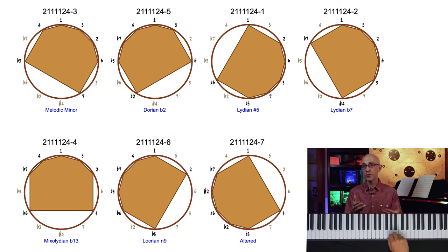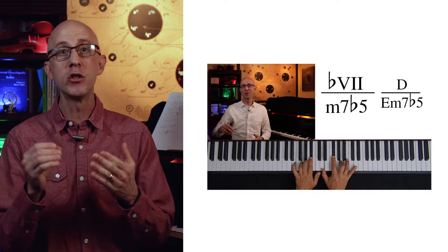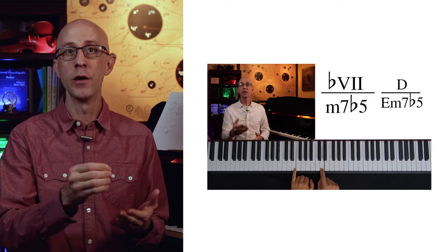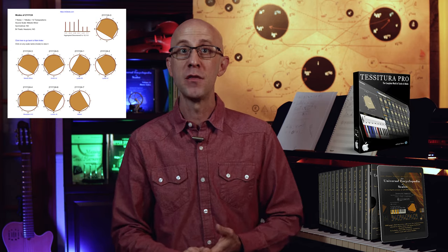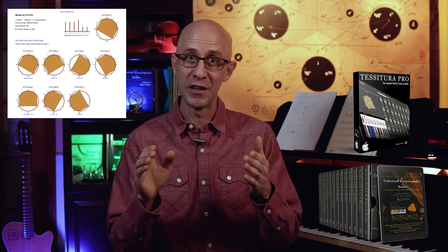You might think that these are some obscure scales you've never seen before and that you'll never use. But you're wrong. All these modes from the melodic minor are very often used in soundtracks and of course in jazz. We just did a piano trick with the minor 7 flat 5 chord using the Locrian natural 9 scale. The whole point is that as you get more exposed to soundtracks and advanced music theory, you'll eventually come across one of these modes.